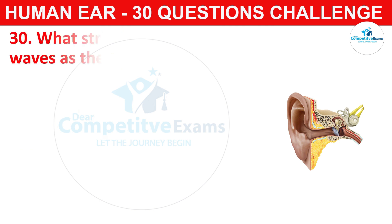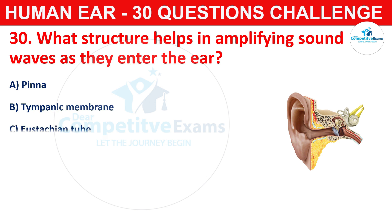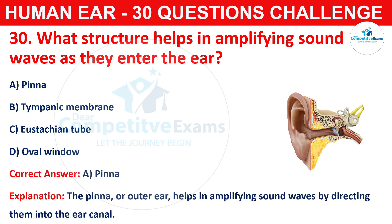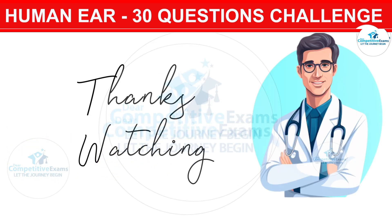Question number thirty: what structure helps in amplifying sound waves as they enter the ear? The options are pinna, tympanic membrane, Eustachian tube, or oval window. The correct answer is A, that is pinna. The pinna, or outer ear, helps in amplifying sound waves by directing them into the ear canal. Now it is time to comment your score!